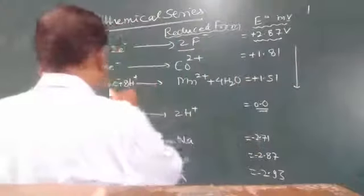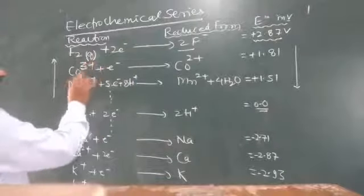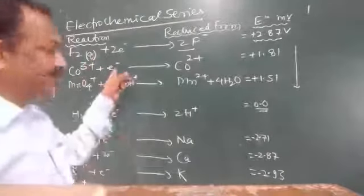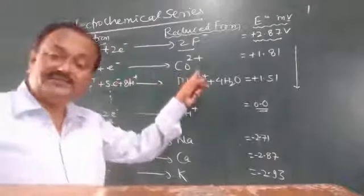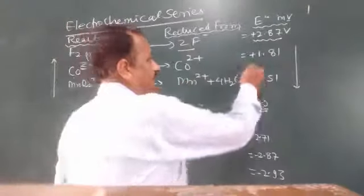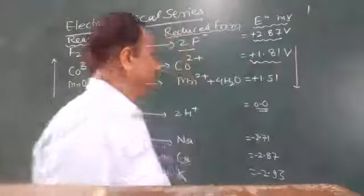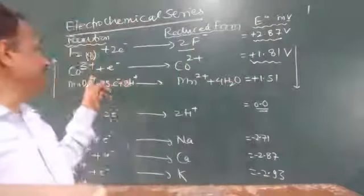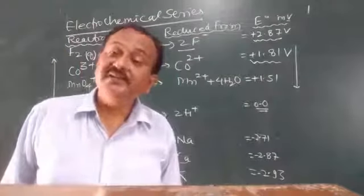Coming to the next element: the cobalt ion in the oxidation state of +3 will gain an electron to form Co²⁺, and here the standard potential value is +1.18 volts. Cobalt(III) is also very strongly oxidizing in nature.